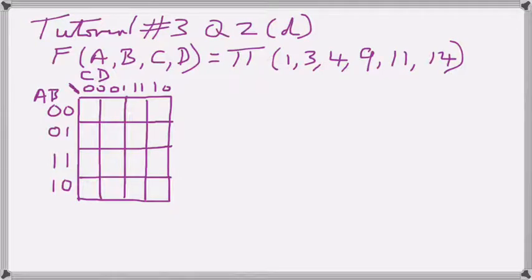In this short video, we examine a possible solution to tutorial number 3, question 2d, where we're asked to simplify the above expression expressed as a product of sums. That's what the product symbol means there in front of the list of numbers. The list of numbers simply refers to the relevant squares on the Karnaugh map.